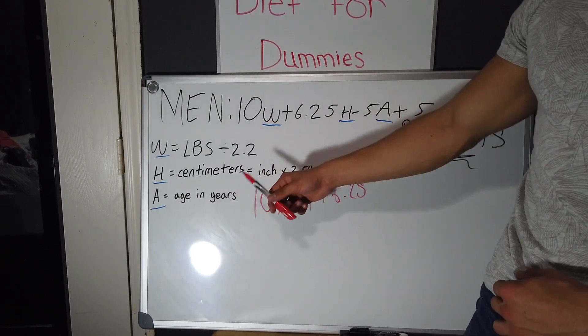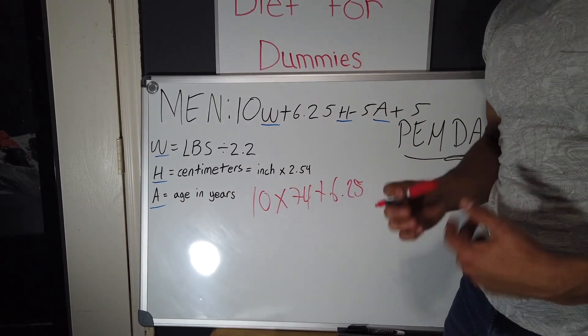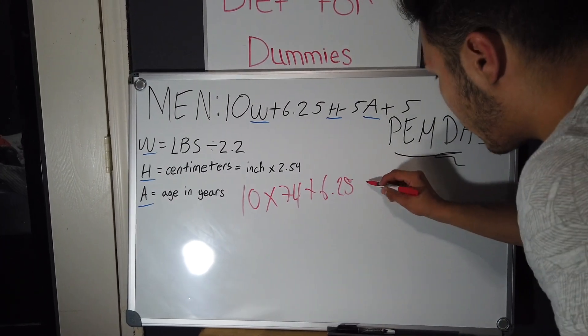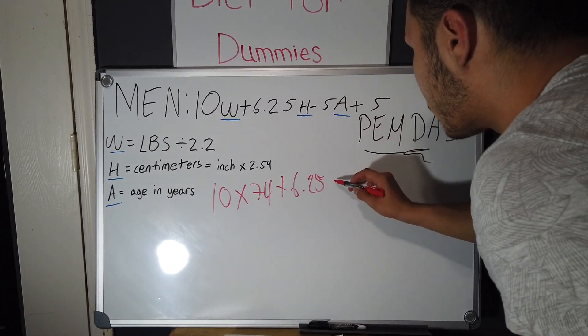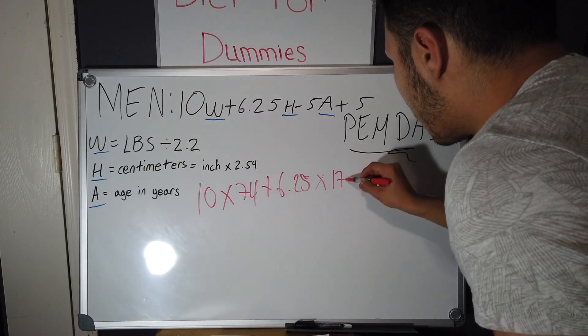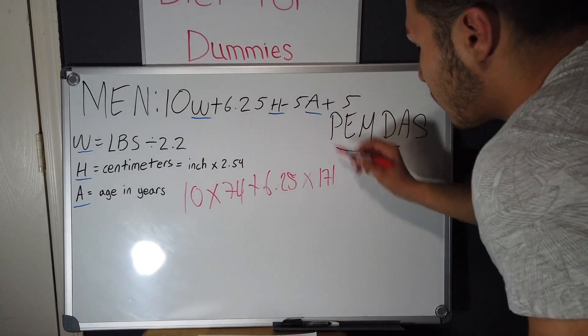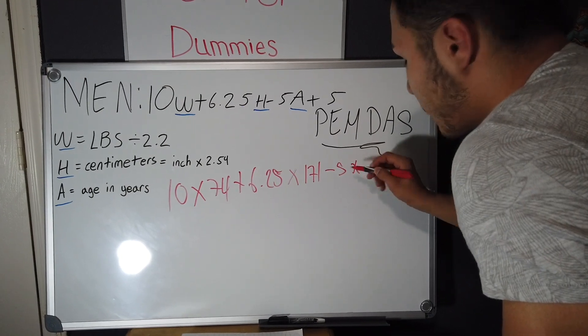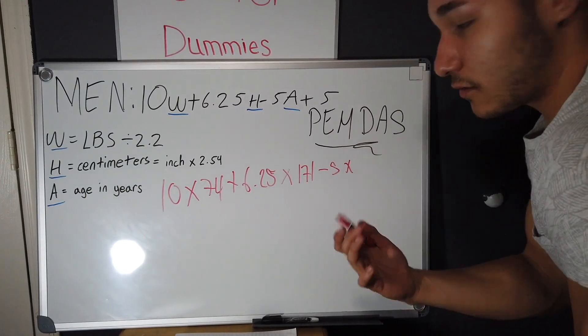So then once you get that, since I'm 5 foot 7, then I'll times that which will give me my centimeters and it will be 171 centimeters. So I would bring it down, so times 171.